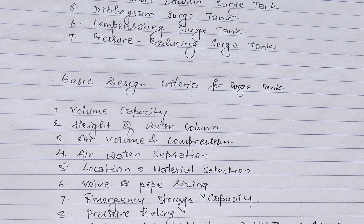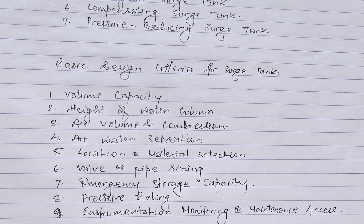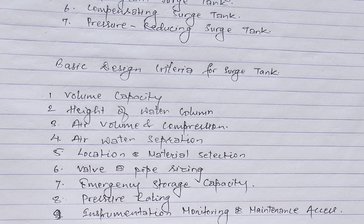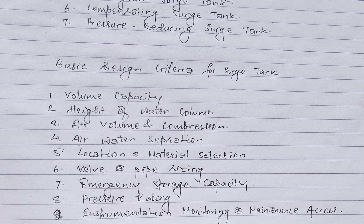The next criterion is pressure rating: the source tank and its components must be designed to withstand the maximum expected pressure within the system to avoid structural failures, including anchor blocks, saddle supports, or other structural support elements. Instrumentation for monitoring water levels, pressures, and other relevant parameters should be considered for real-time assessment of the source tank's performance, with convenient access points for inspection, maintenance, and cleaning to ensure long-term reliability.